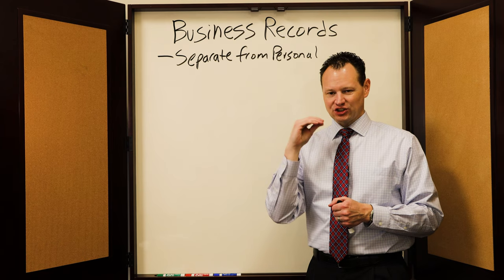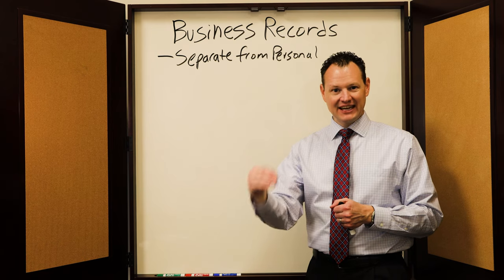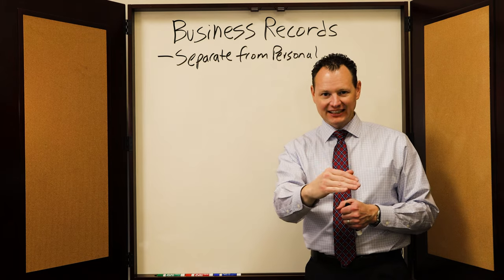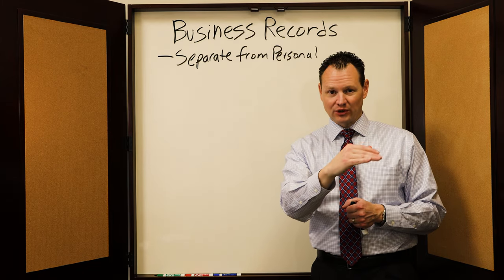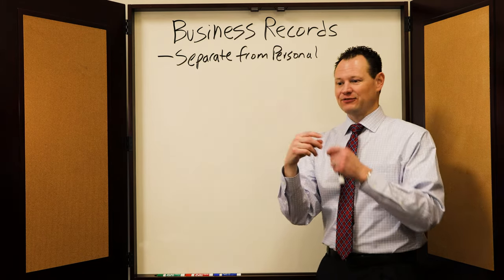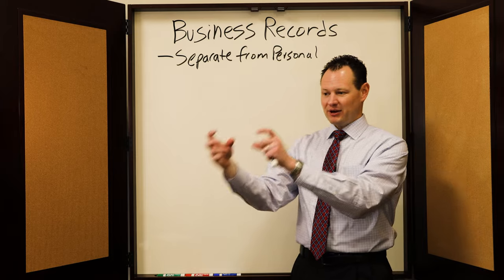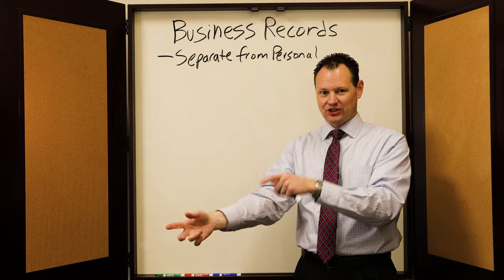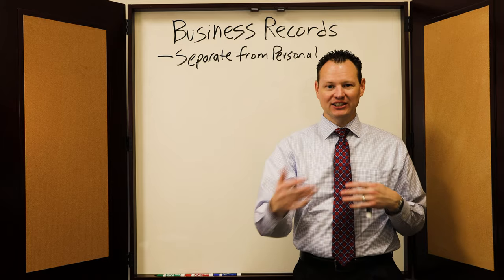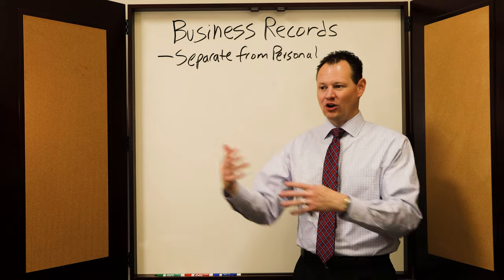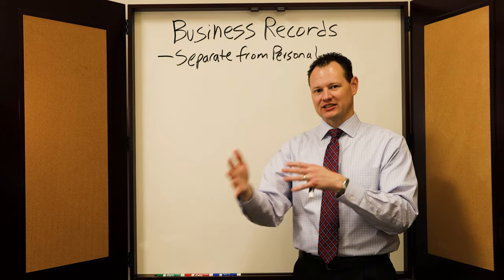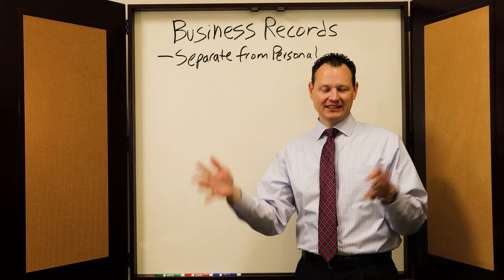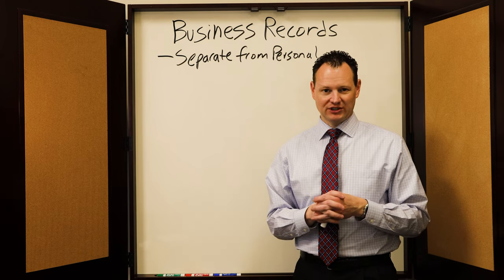What they do is go through those bank statements and add up every single deposit that goes into your bank account during that period. They get the total number and then compare it to the amount of income reported on your tax return. If you have more deposits in your bank account than is reported on your tax return, you now have to explain to the IRS why.